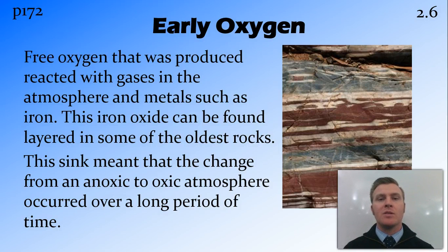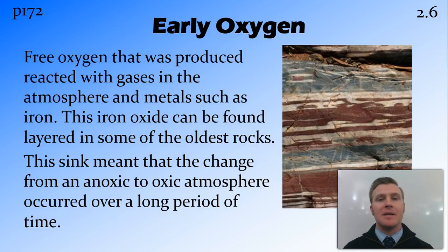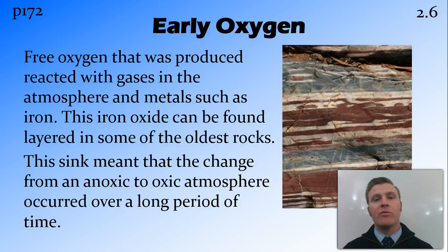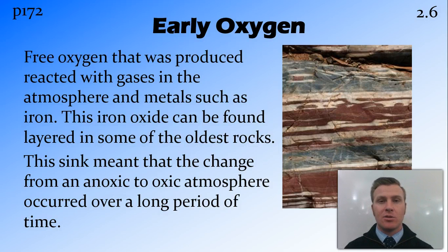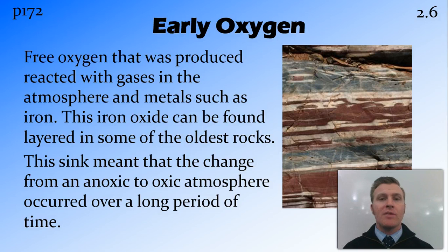Another way that oxygen was being used up was in the formation of iron oxide from iron deposits. Rocks form in layers or strata, and some of the oldest rocks on Earth are around 3.8 billion years old. We can actually see when the rocks went from containing iron not bonded with oxygen, to iron bonded with oxygen in the form of iron oxide. This lets us date when the Earth moved from an anoxic to an oxic atmosphere. This took a long time because both the atmospheric gas reactions and the iron forming iron oxide were two big sinks sucking oxygen out of the atmosphere. It wasn't until both of these were totally saturated with oxygen that O2 was able to pool and collect in the atmosphere.